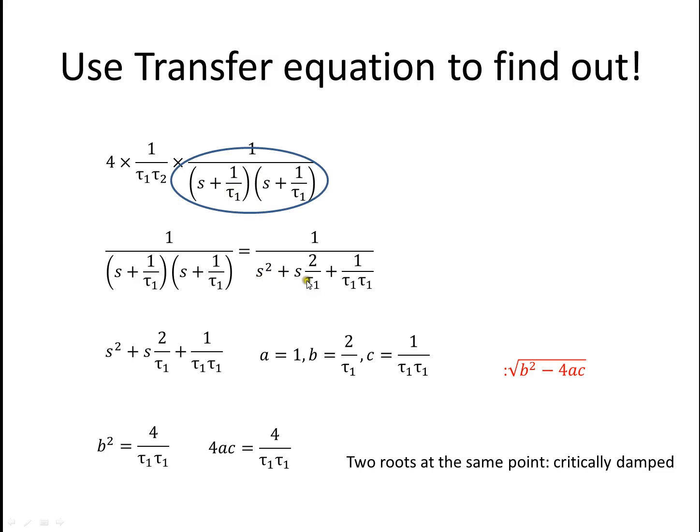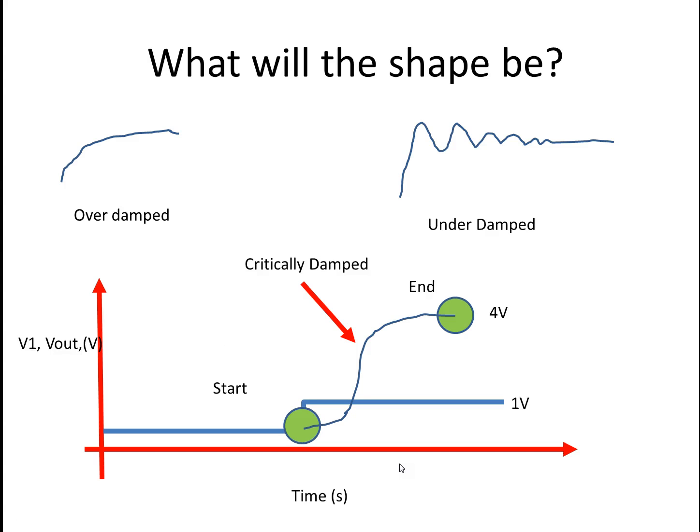Multiply everything out. Then notice, hey, a is one. B is two divided by τ. And c is one over τ1 squared. I just use this part of the quadratic equation and find out, hey, B² is equal to 4AC. Two roots are at the same point. That means it's critically damped. And that means all I have to do is kind of draw in that shape.